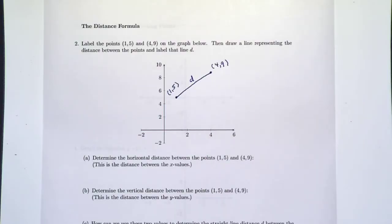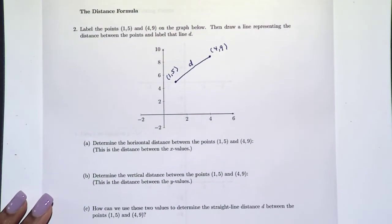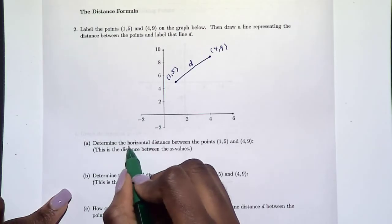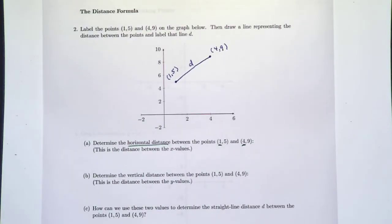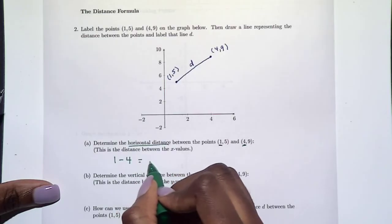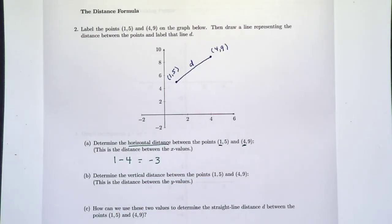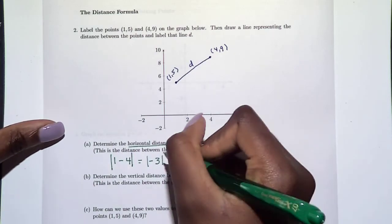Part A says: determine the horizontal distance between our two points. Horizontal distance is just the distance between our x values, one and four. We use subtraction to find distance: one minus four gives negative three. But distance is never negative, so we take the absolute value. The absolute value of negative three is positive three, so the horizontal distance between these two points is three.